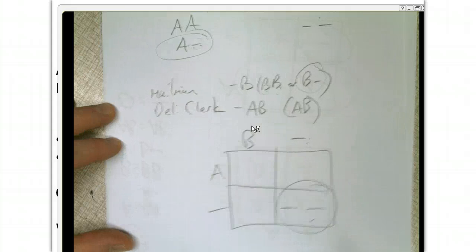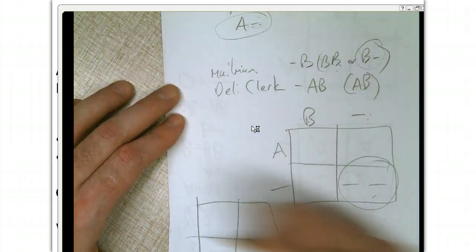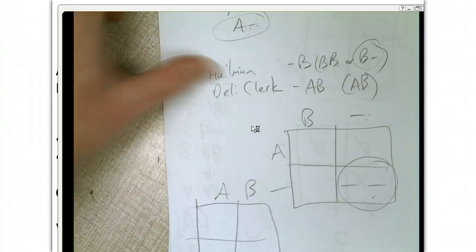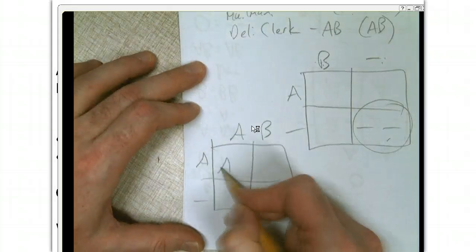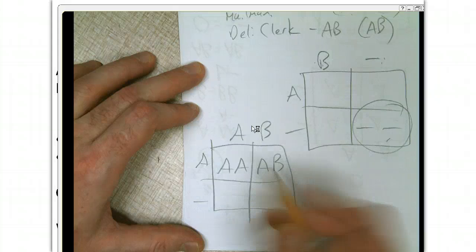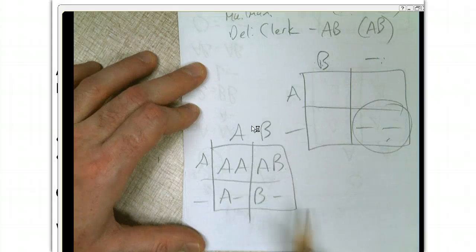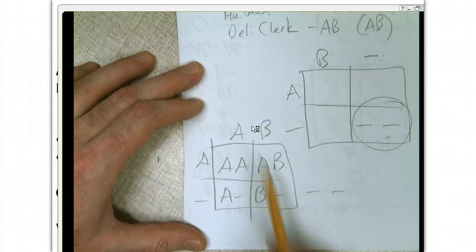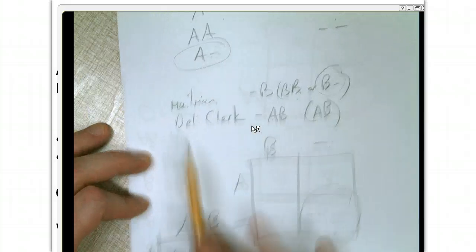Now let's take a look at the deli clerk. If the deli clerk is AB and mom is A blank, then we get AB, AA, A blank, and B blank. There's no possibility of making O blood (blank blank) from a deli clerk that's AB. So this guy's off the hook — he's not going to have to pay child support.